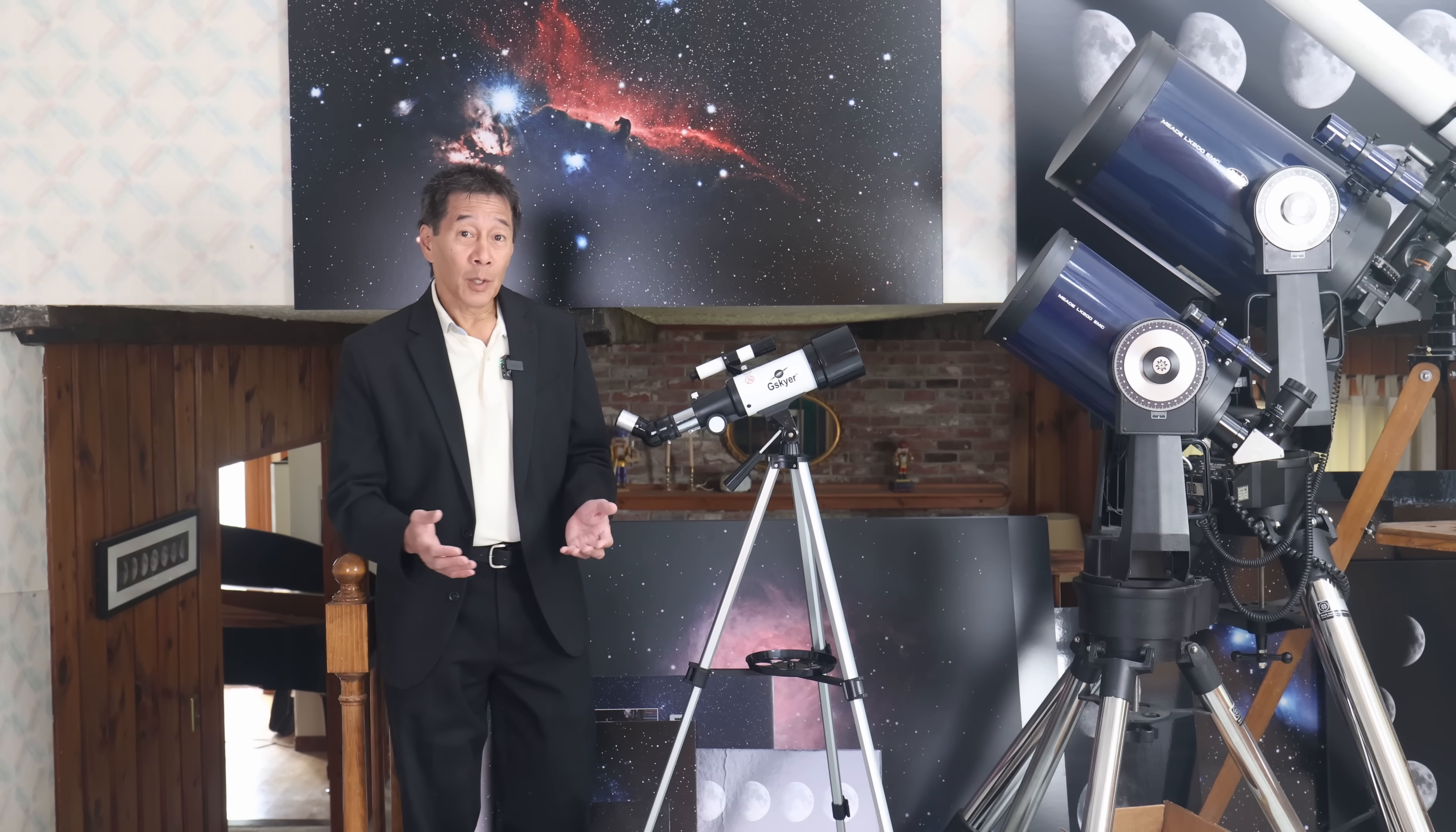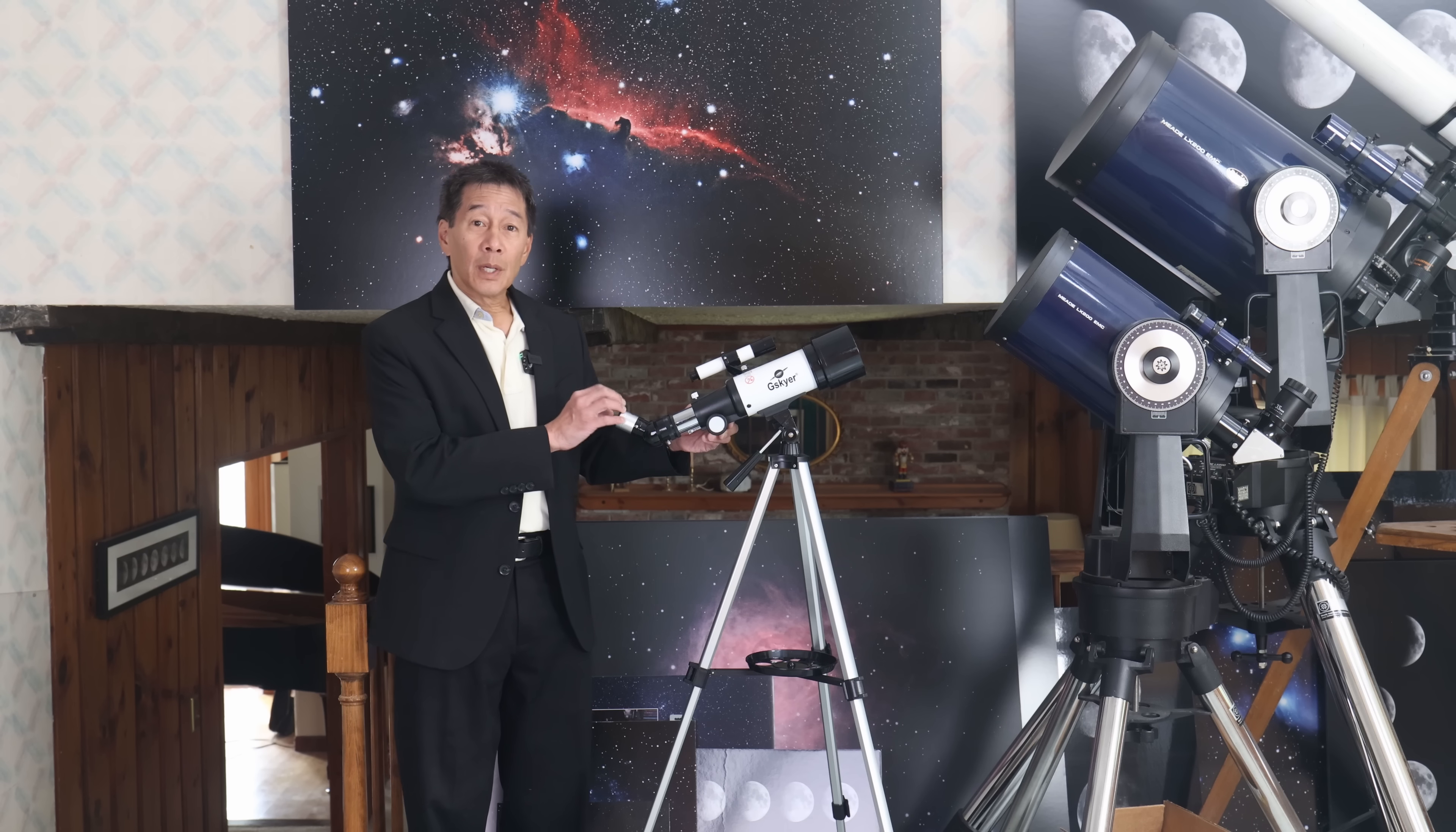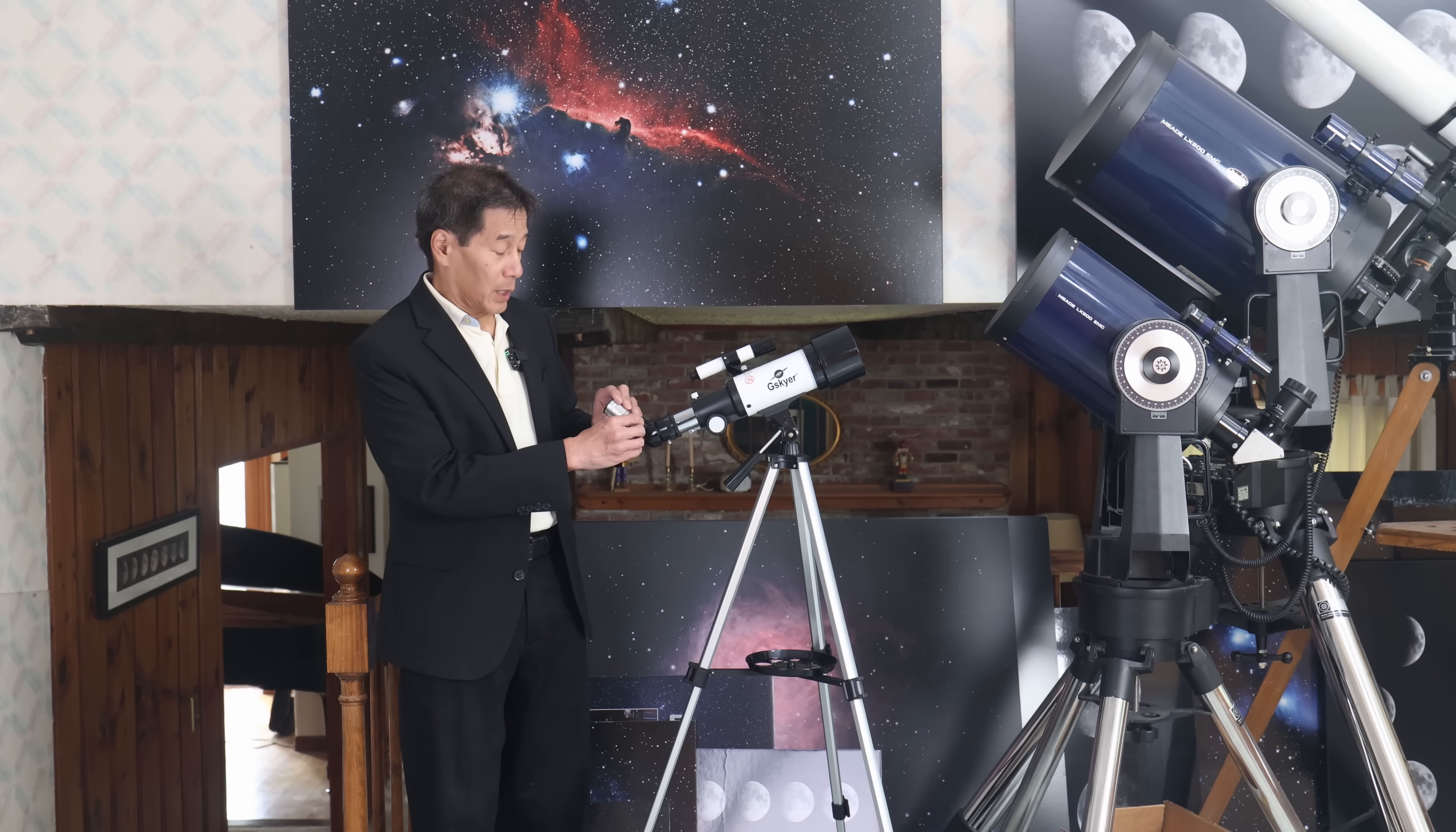So first of all, what we have here is a refractor. It's a telescope with a lens at one end. Here is the focuser and here is the eyepiece at the other end to change magnifications. You change eyepieces.